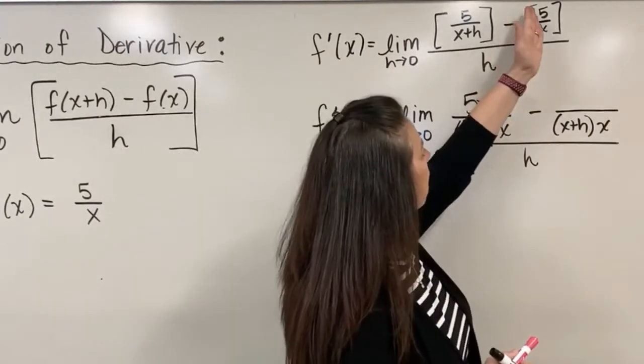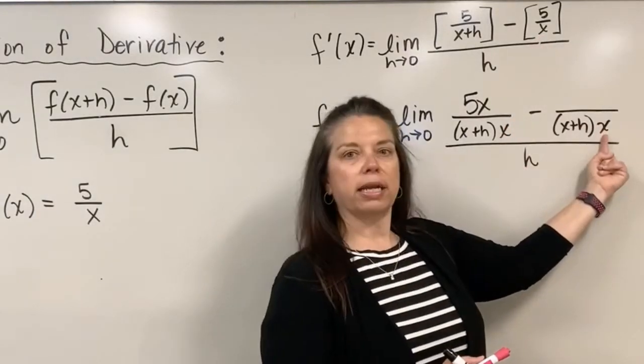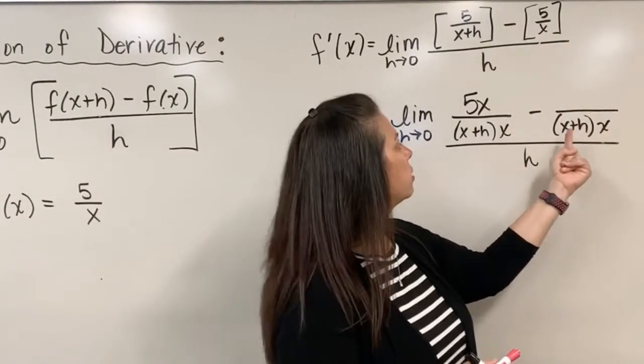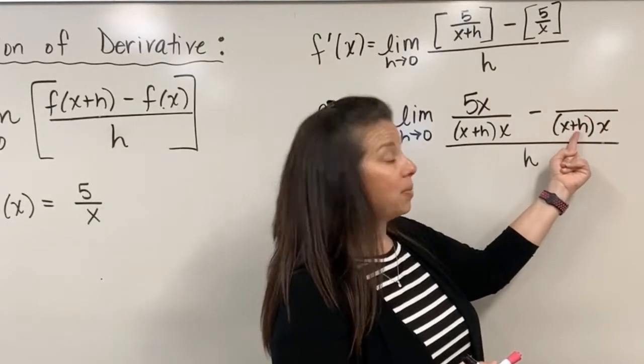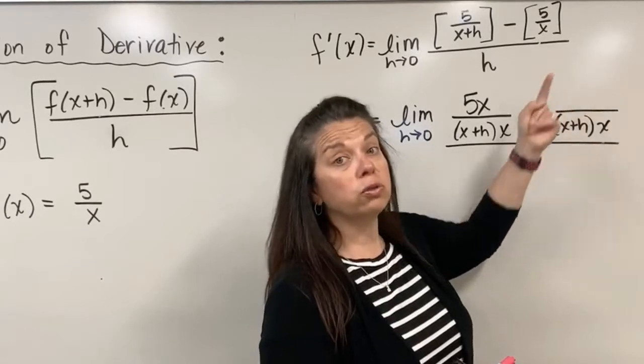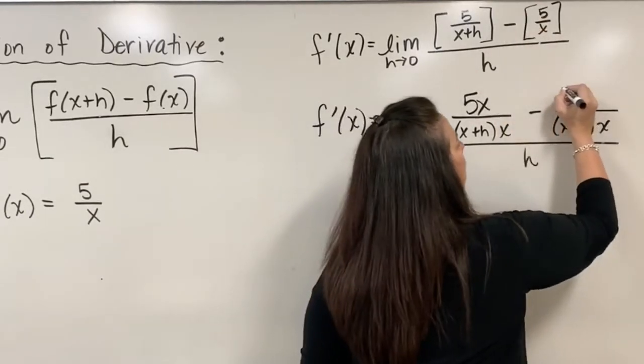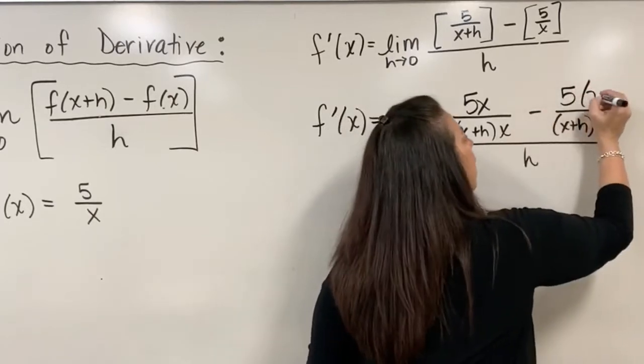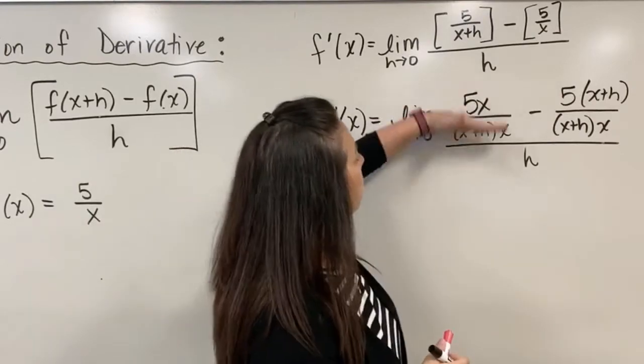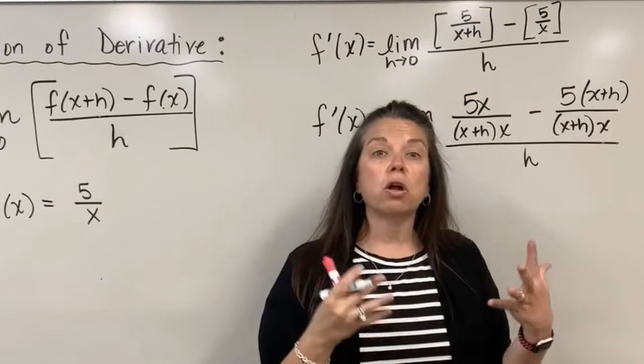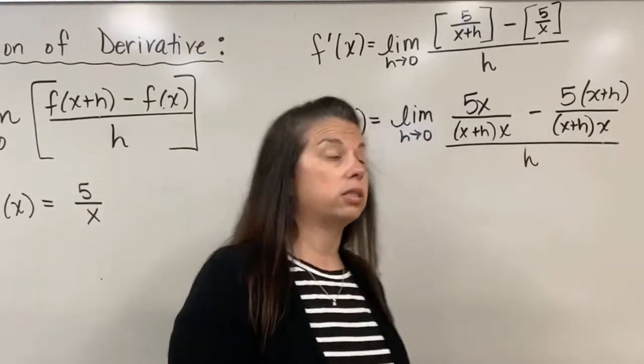In my second fraction, I had an x to begin with. I have an x right here, but what I'm missing is the factor x plus h. So if I'm going to multiply in the denominator by x plus h, I should also do the same to the numerator. I already had a 5 in my numerator, but now I'm going to have to multiply that 5 by x plus h. So in doing it this way, we are building what's called equivalent fractions so that we can actually now subtract these fractions together.